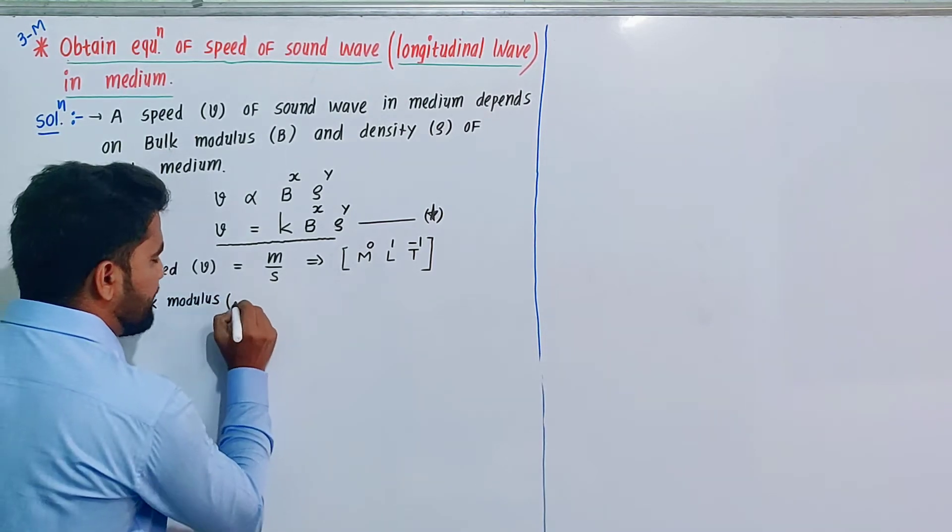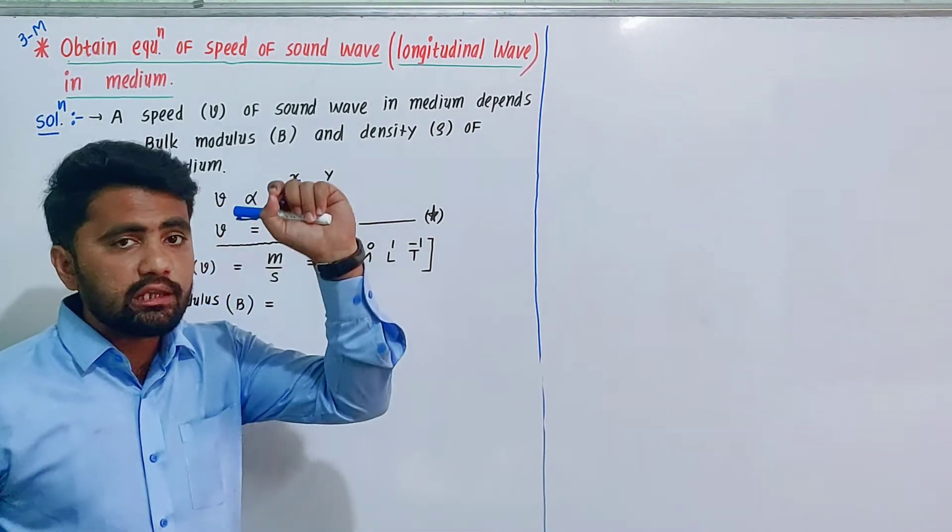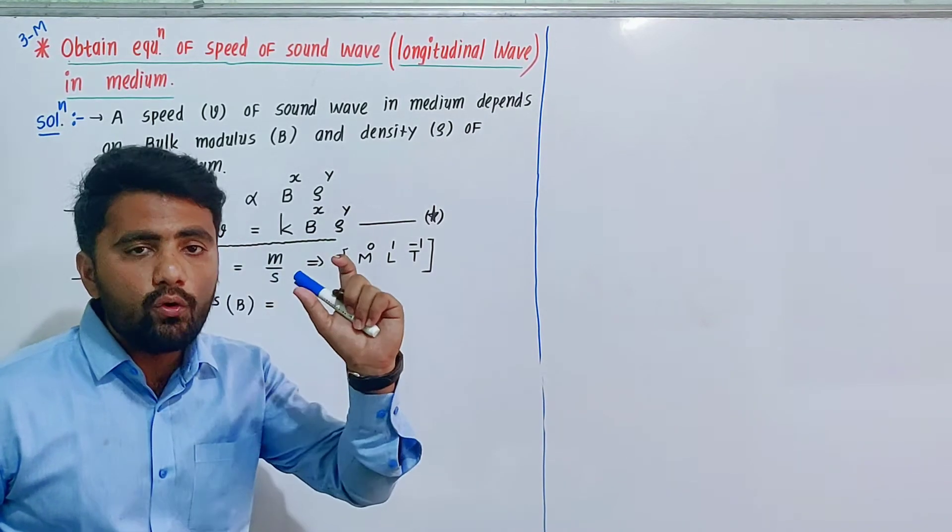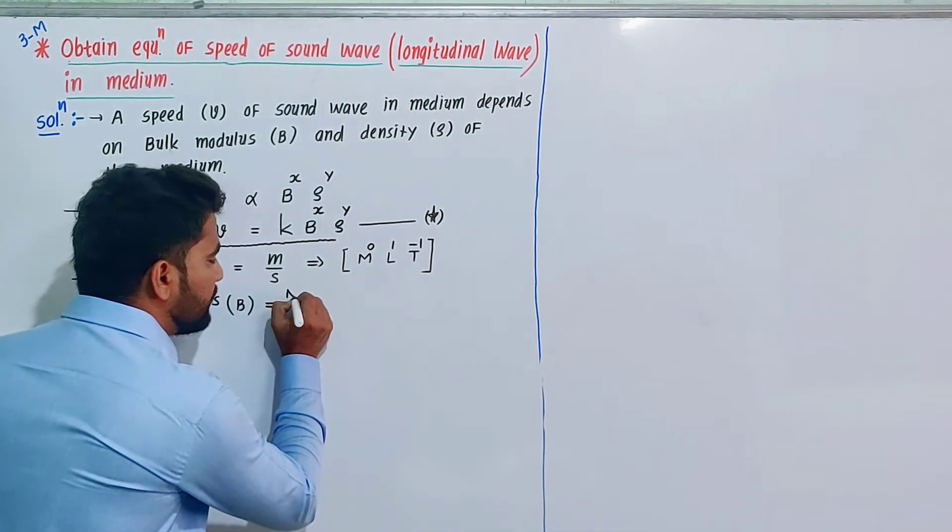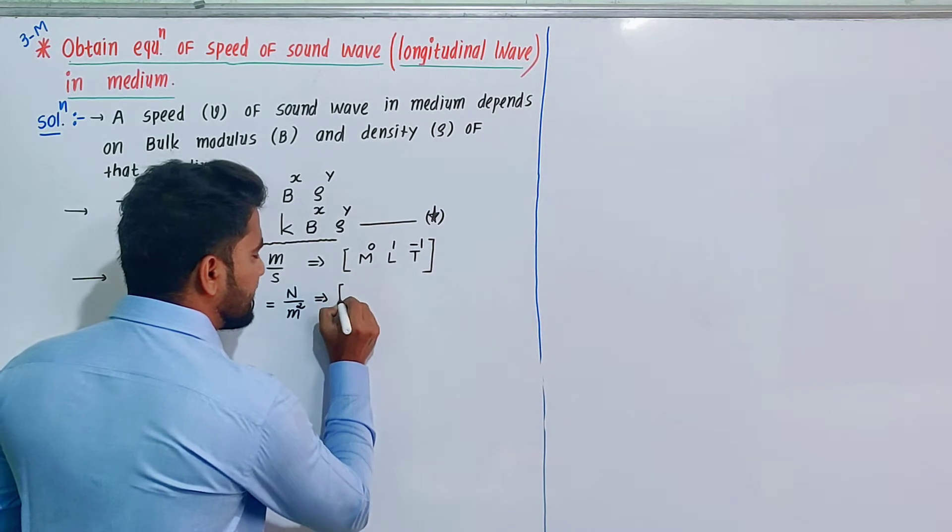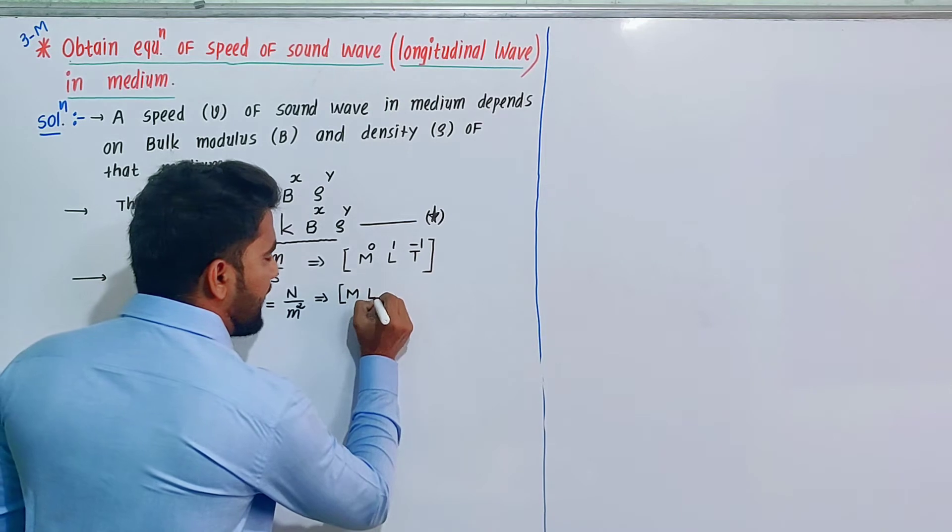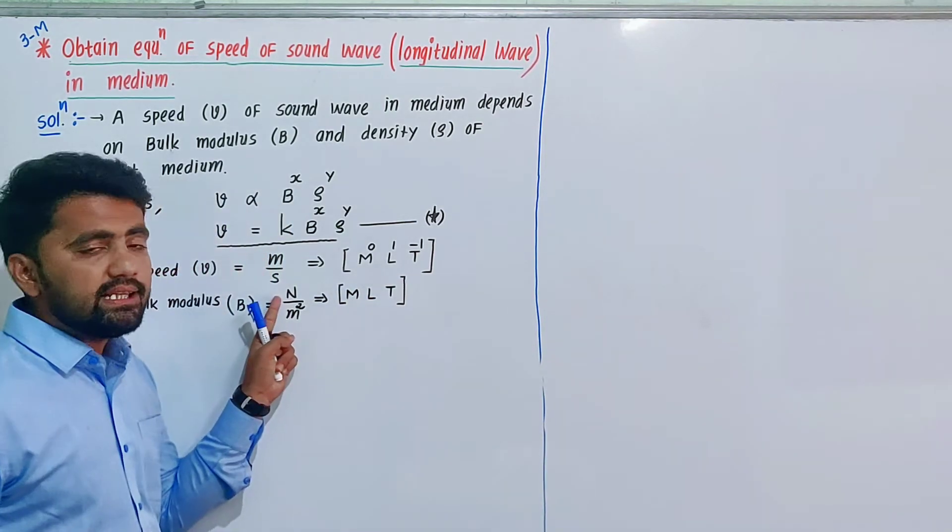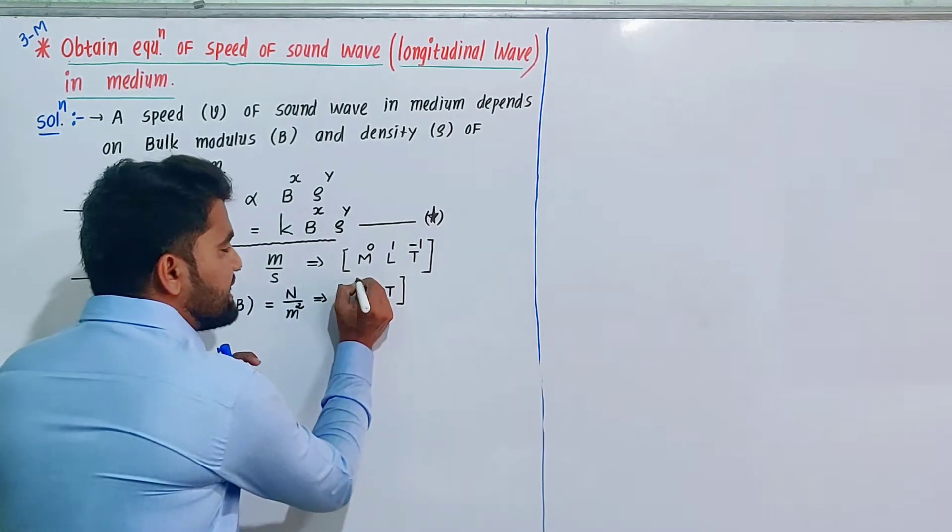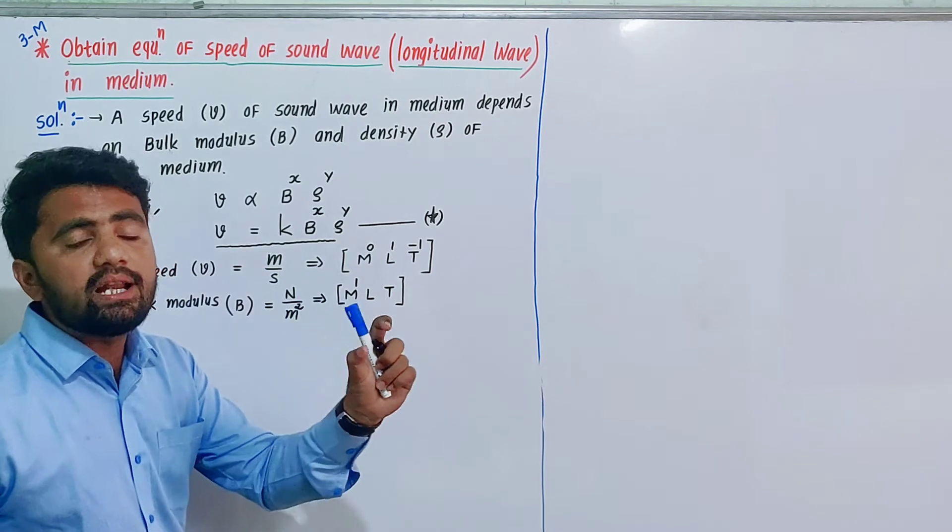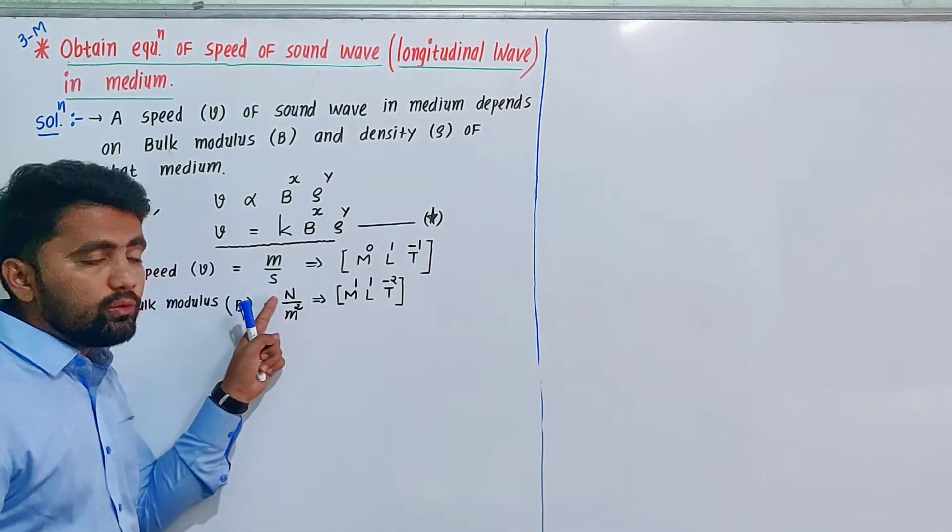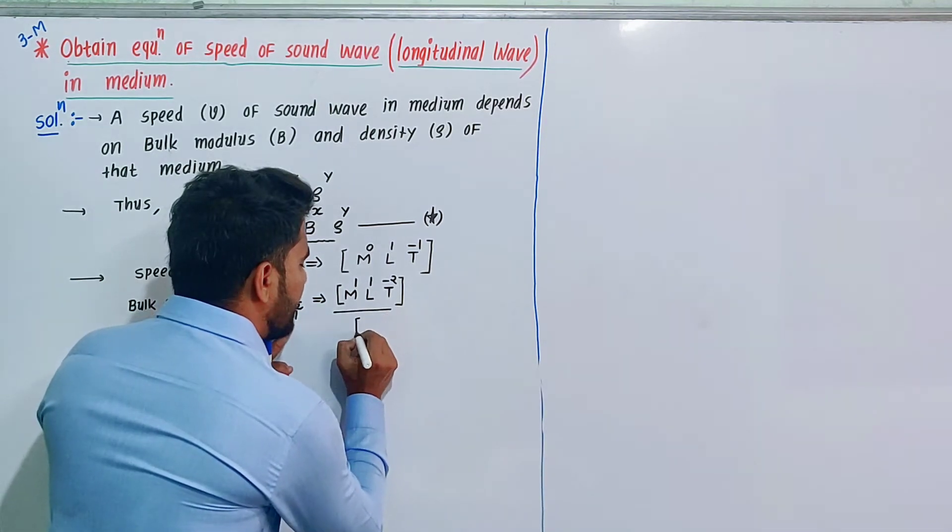Next, bulk modulus B. Bulk modulus unit is stress by strain. Strain has no unit, so stress unit: force upon area, that is newton per meter square. First newton: force equals mass times acceleration. Mass is kg M^1, acceleration is meter per second square, L^1 T^-2. So newton is M^1 L^1 T^-2.